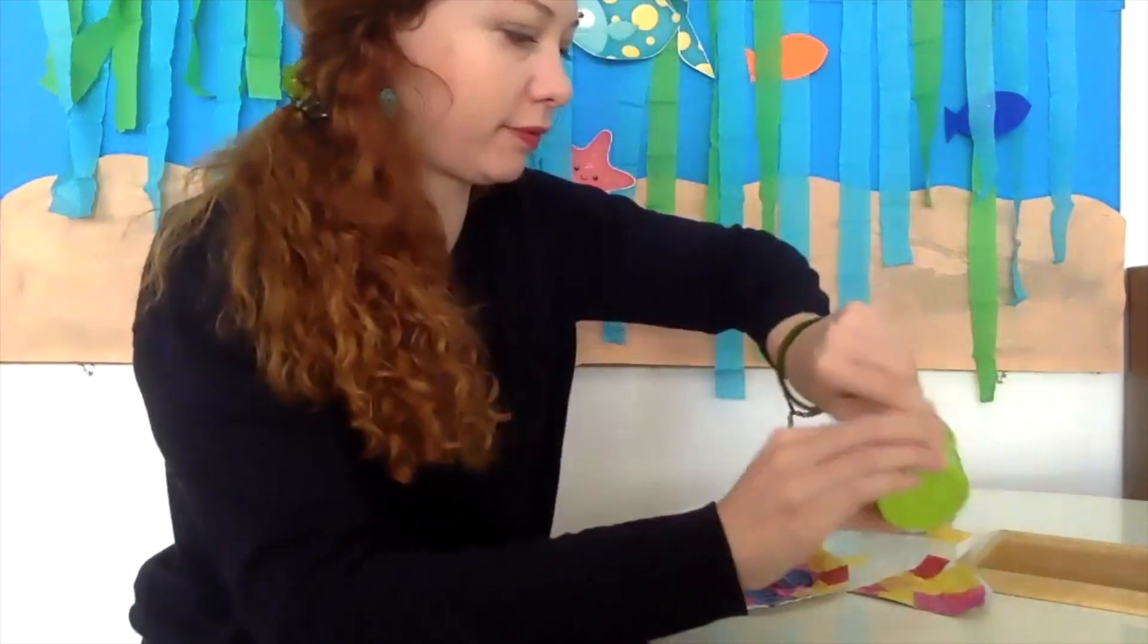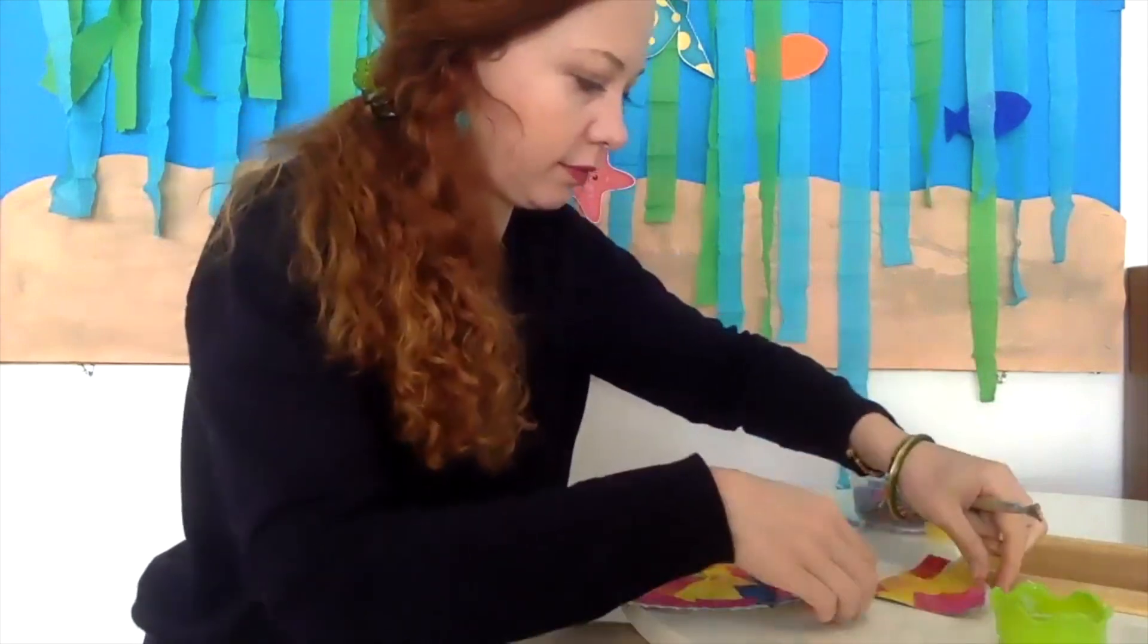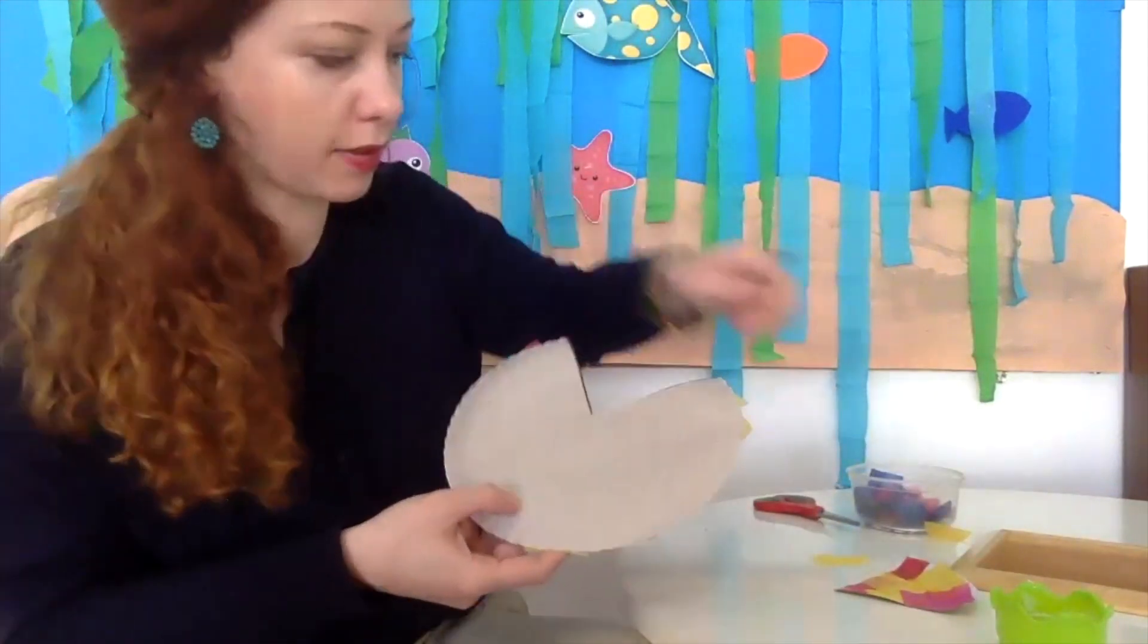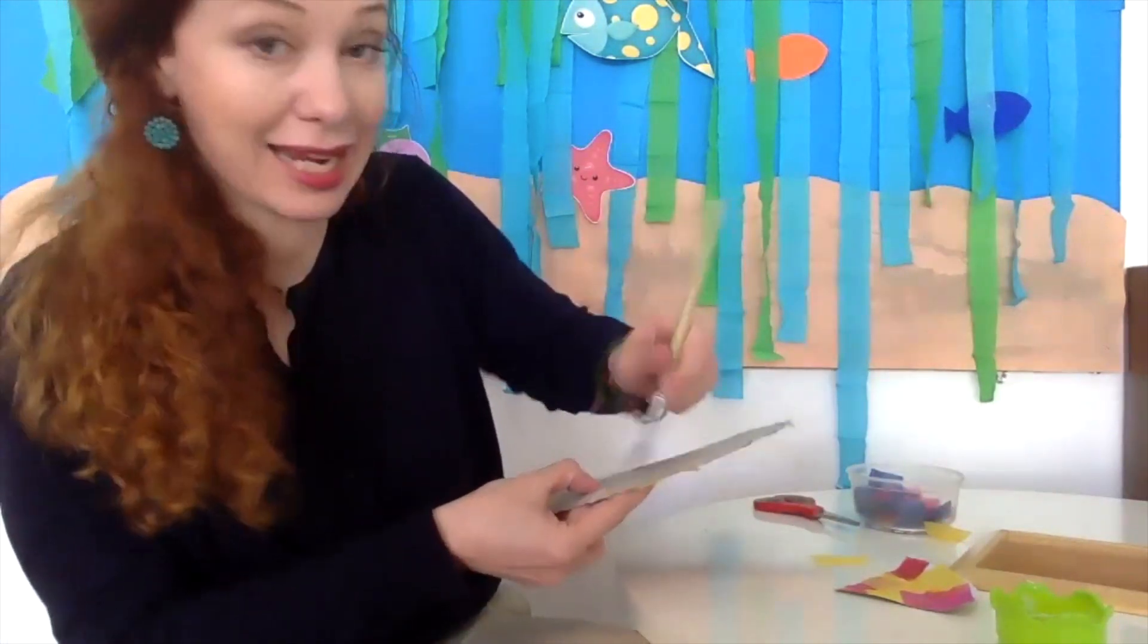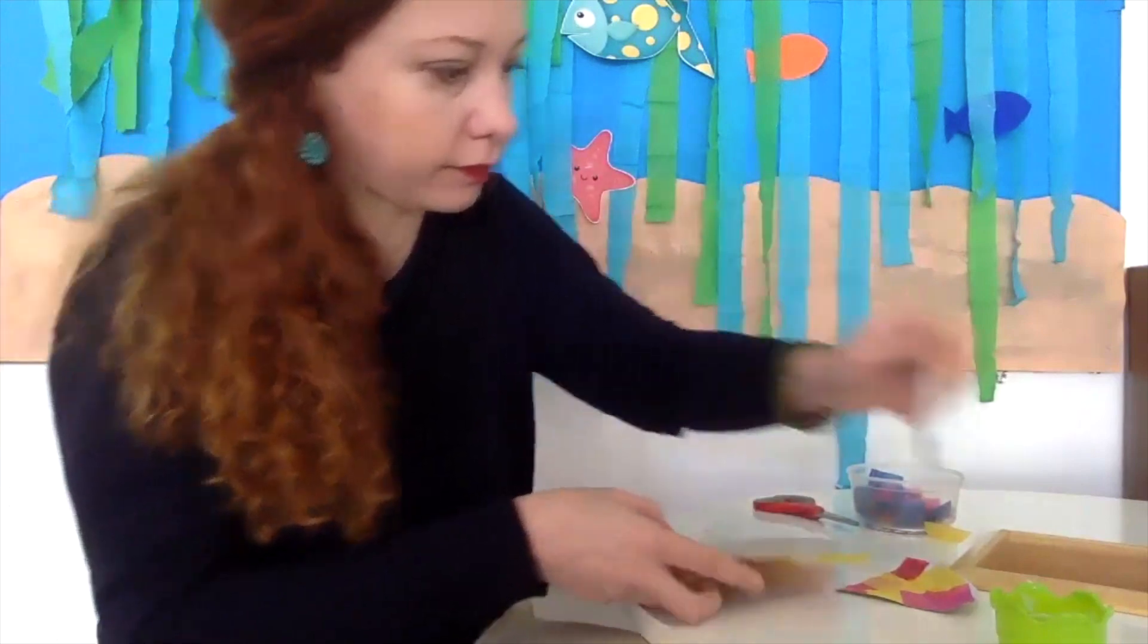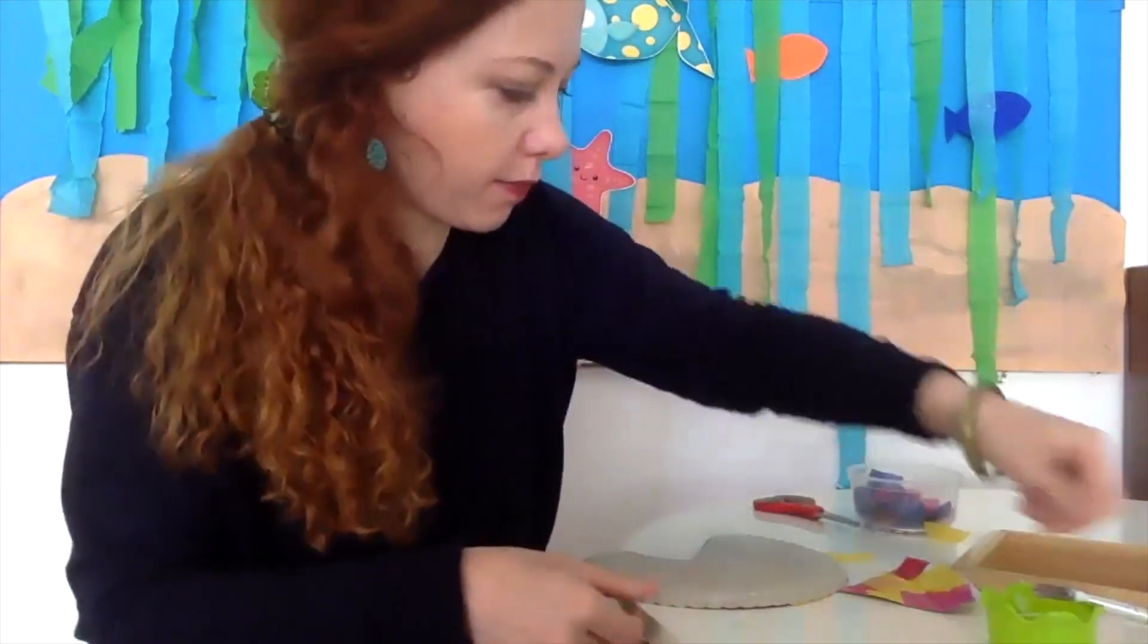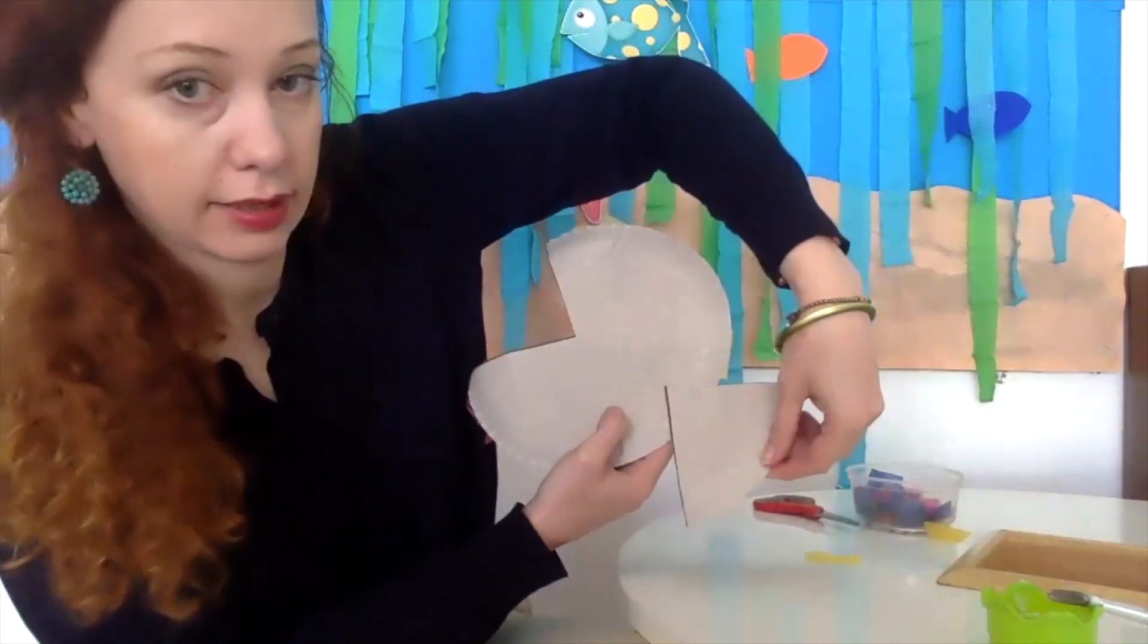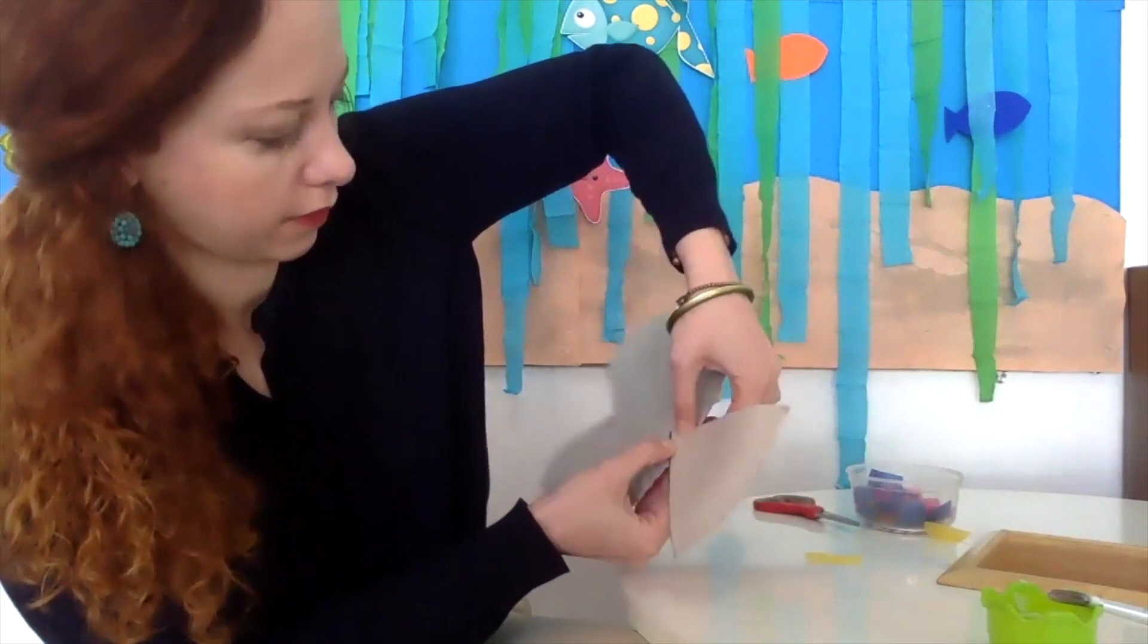Get some more glue and then turn it this way up and add a little bit of glue here—it's for the tail to stick. Then you turn it like this, put it here, tap tap tap.